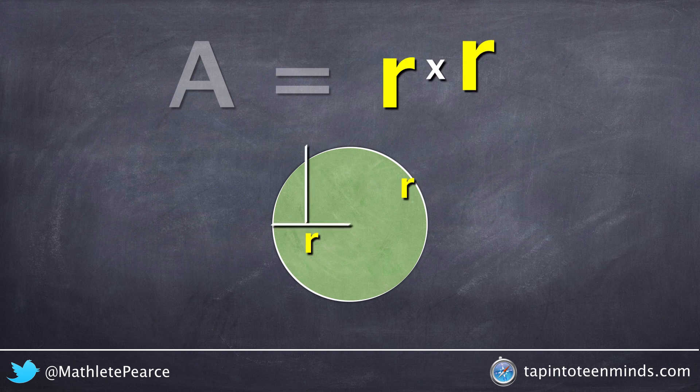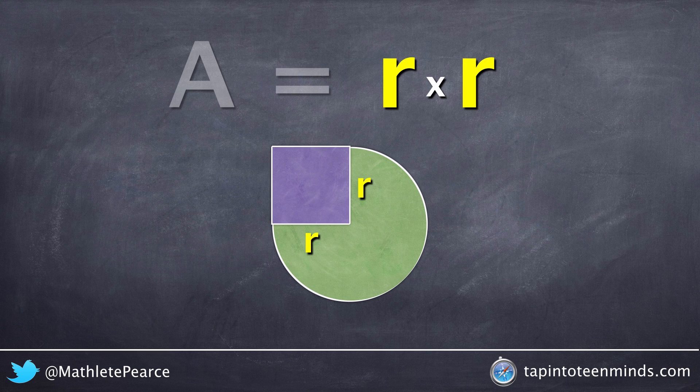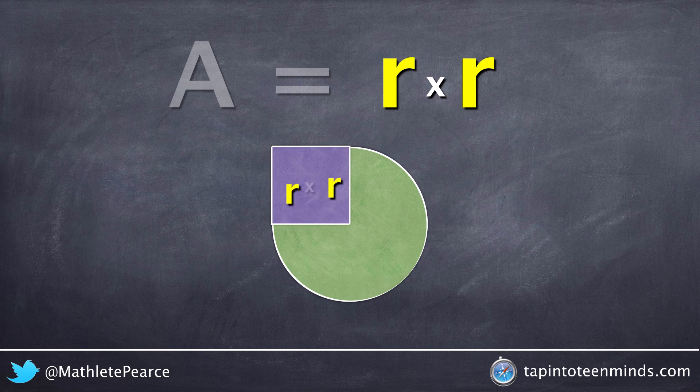If we multiply by a second r, r times r actually produces a square covering an area of r times r. So whatever the radius is, times itself.